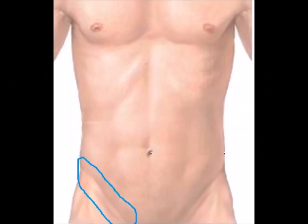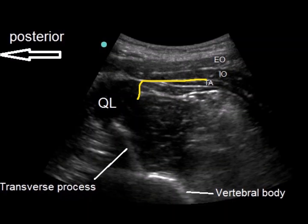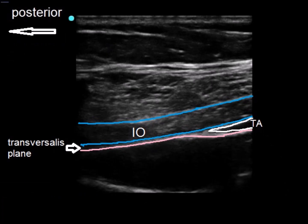For inguinal surgeries such as caesarean section, hernia, iliac bone graft, and also in hip surgeries with lateral approach, these nerves can be blocked using the QL block, transversalis, or selective block at the TAP. If you prefer QL block, the link to the QL block technique is in the comments below. In the transversalis block, the local anesthetic is injected between the internal oblique and transversalis fascia posterior to the transversus abdominis — this is actually a QL1 block.